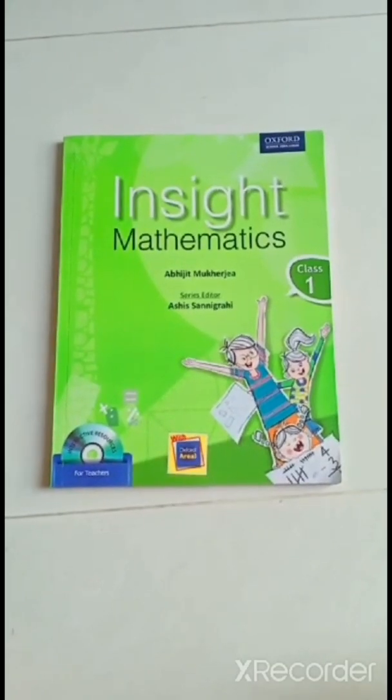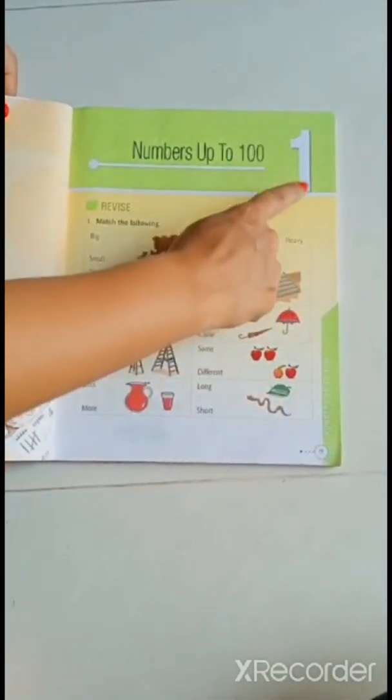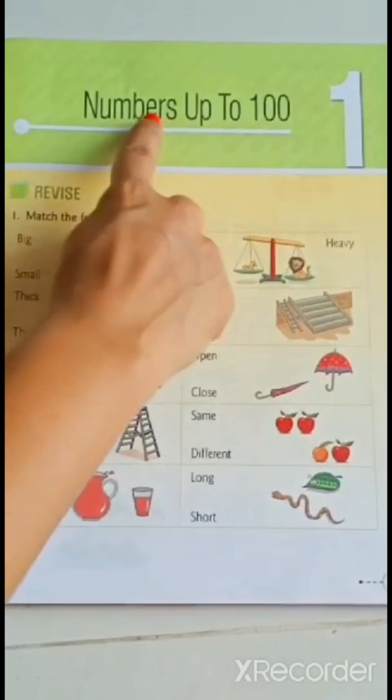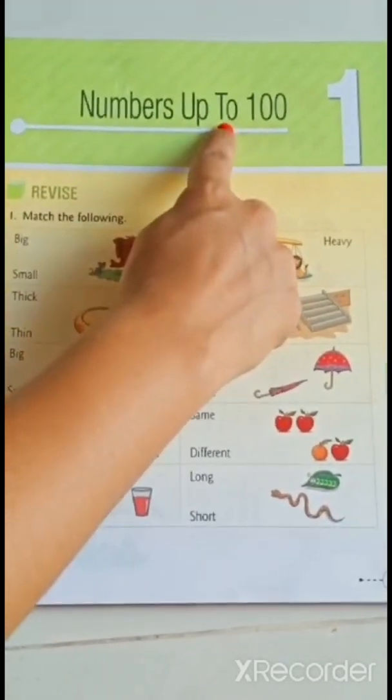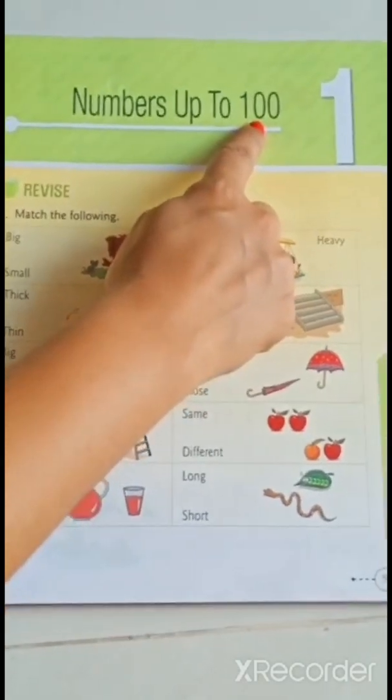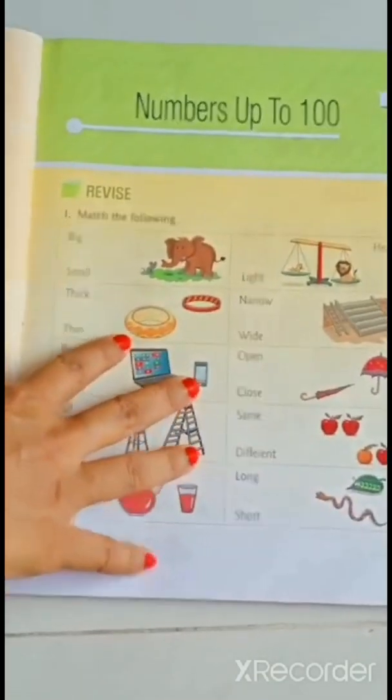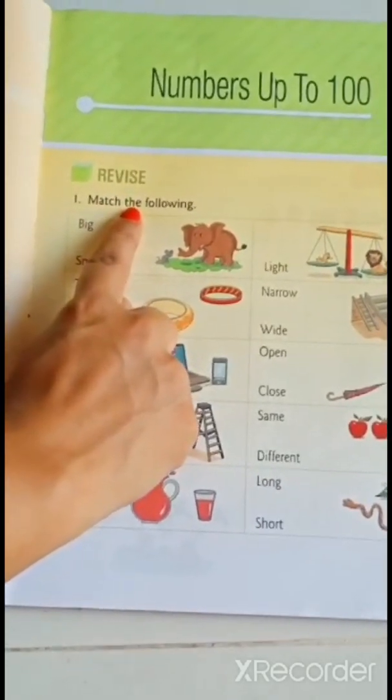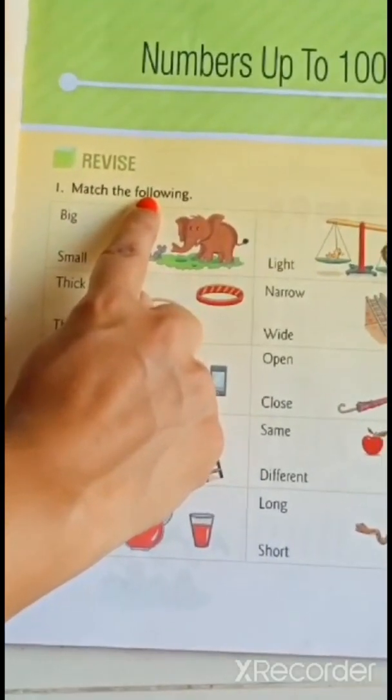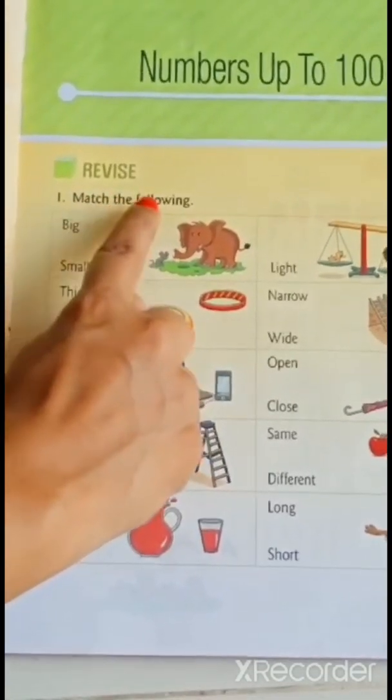Now, open your maths textbook. Page number 9. Chapter number 1. N-U-M-B-E-R-S numbers. U-P of T-O-2-1-double-0-100. Numbers up to 100. Alright. Question number 1. M-A-T-C-H match. T-H-E-D-O-F-O-Double-L-O-W-I-N-G following. Match the following.